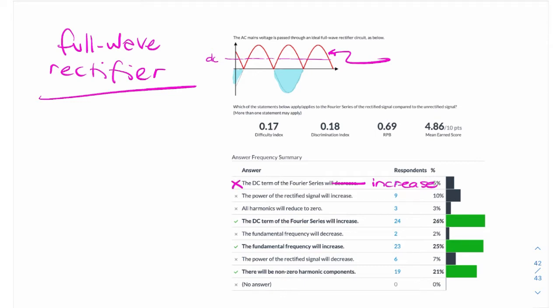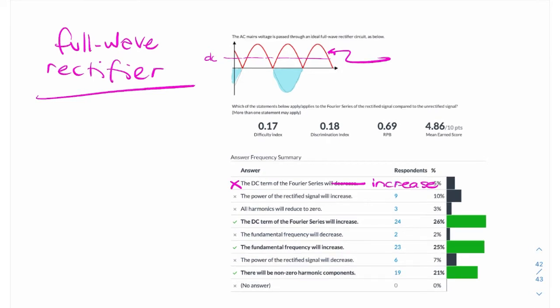The next option is the power will increase. The power of the rectified signal will increase. Now, what would cause the power of a signal to increase? So remember, when talking about power, what we're talking about is the signal squared.